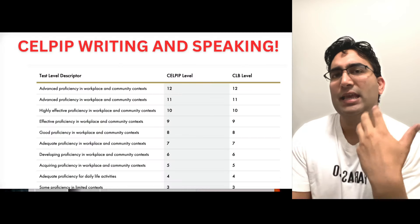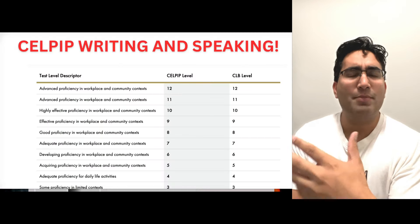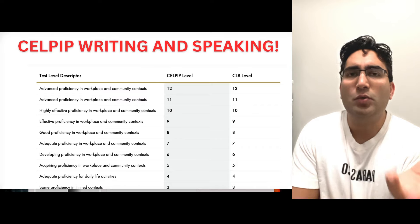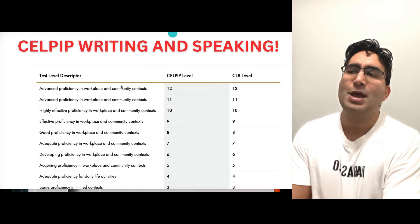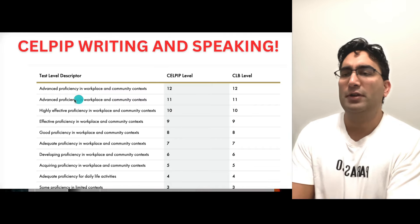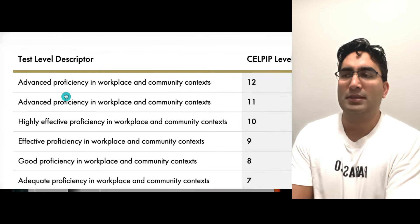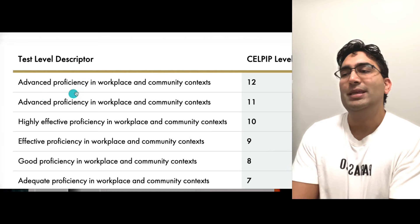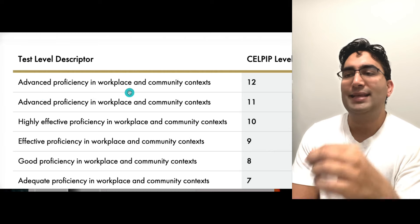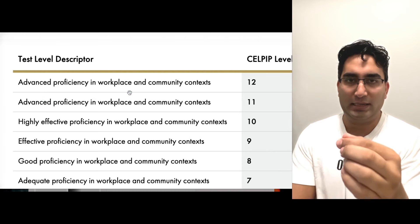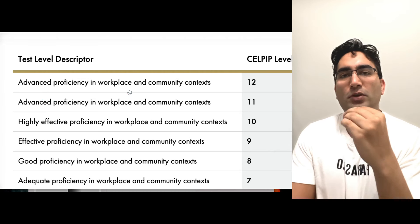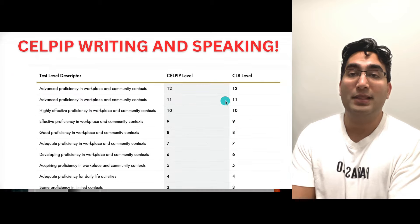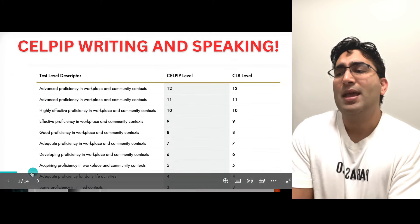So what really is the advanced vocabulary for CELPIP writing and speaking, and how can you implement it? If you see their official marking scheme — this is from their official website — you need advanced proficiency in workplace and community context. If you use that, you score a CELPIP level 12, which is what you need.